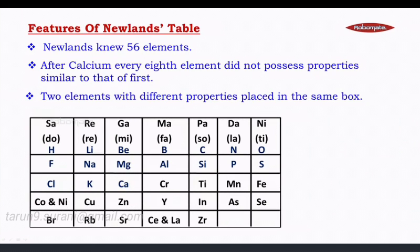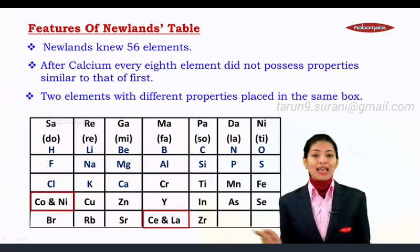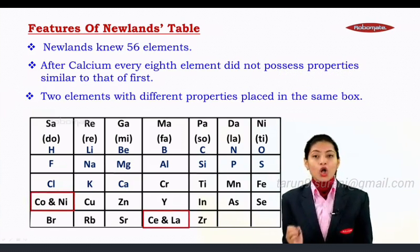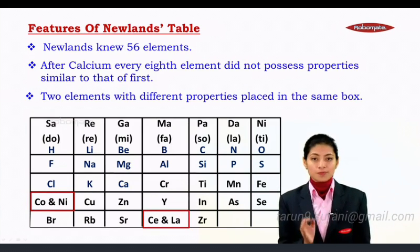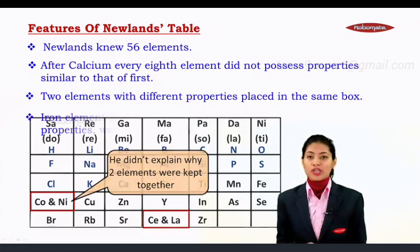Two elements with different properties were placed in the same box. As you can see over here, cobalt and nickel are placed in the same box, and cerium and lanthanum are also placed in the same box. Also, he could not give the reason as to why they were placed together.